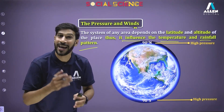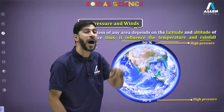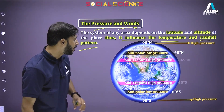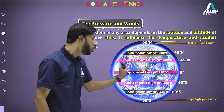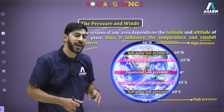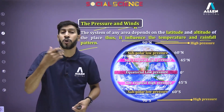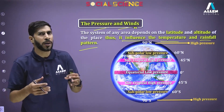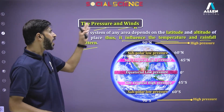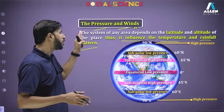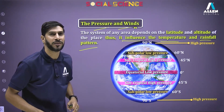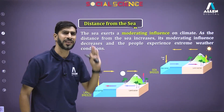We have polar high pressure, then the subpolar low pressure belt, then the subtropical high pressure belt, and at the equator a low pressure belt — because the equator receives large amounts of solar energy, creating warm air and therefore low pressure. So: low pressure means warm air, high pressure means cool air. The pressure and wind system influences temperature and rainfall patterns, and we can see the variation in pressure belts.